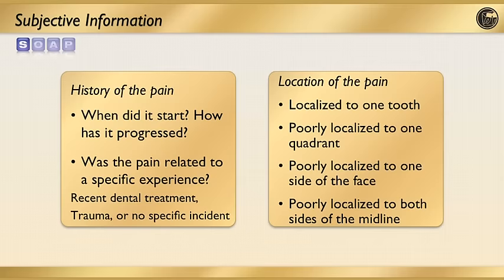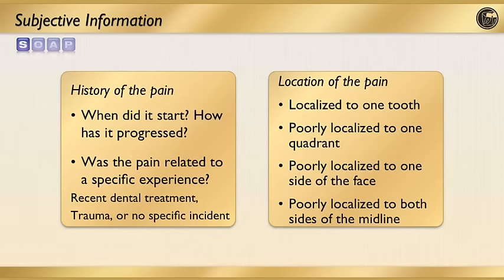Going into the details of the chief complaint, we want to find out all aspects of their pain. The history: when did their pain start and how has it progressed? Was the pain related to a specific incident — did something happen, like a new filling or biting down on something hard? For location, is the pain localized to one tooth? Can the patient point to the specific tooth? I often ask where the pain is, and when I get them to point, they'll point to a different tooth than described, so be aware of that.